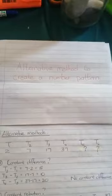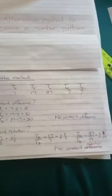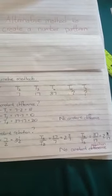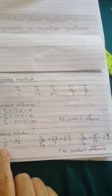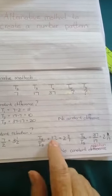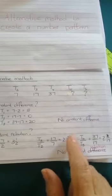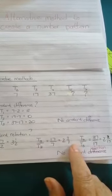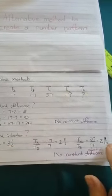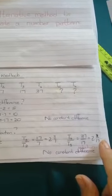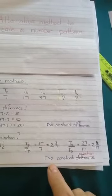If we look at constant relations, then we will also see that there's no constant relation. If I divide T2 by T1, which is 7 divided by 2, I get 3 and a half. T3 divided by T2 is 17 divided by 7, which is 2 and 3 sevenths. And T4 divided by T3 gives you 2 and 3 over 17. So we can see that there's no constant relation.